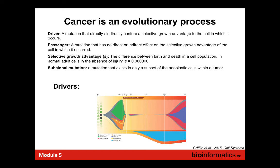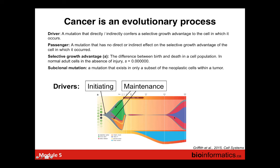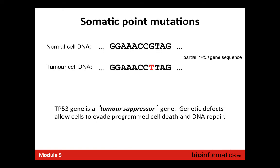Tumors have heterogeneity both in space and in time—at recurrence we often see a different mutational distribution. A quick note on drivers: some mutations are necessary as initiating events, some are maintenance events, and some are only drivers under specific selective pressure like chemotherapy, so they're drivers of progression but not necessarily of initiation.